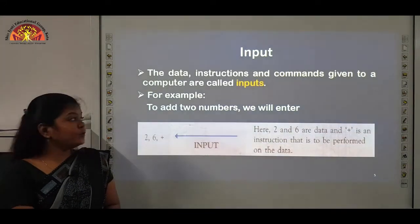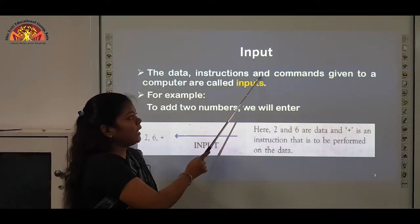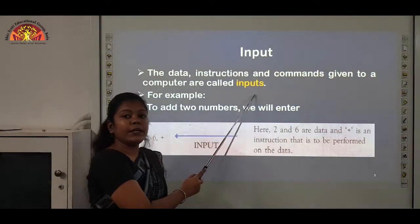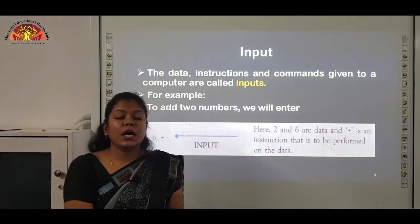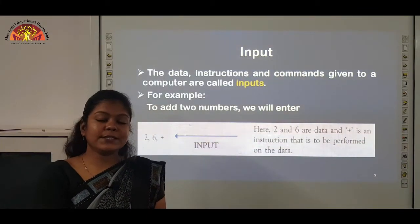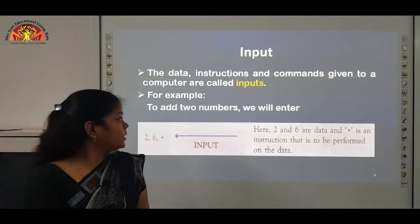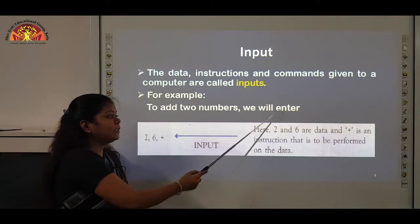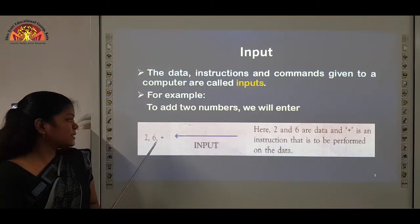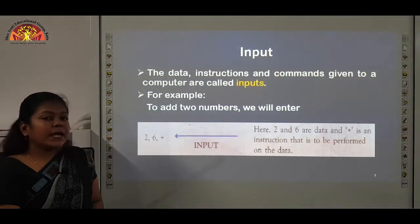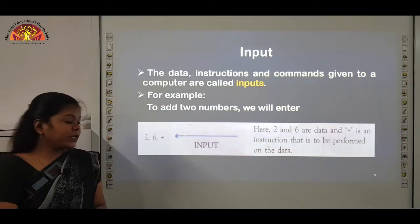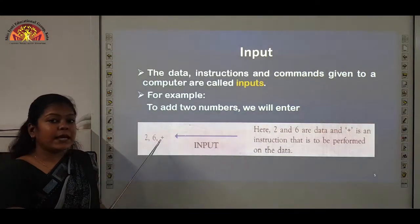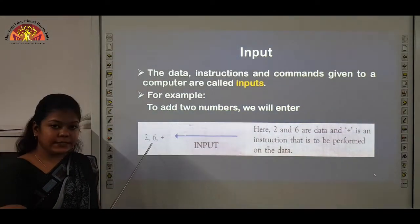First is input. The data, instructions, and commands given to a computer are called inputs. All inputs are given to a computer using input devices like keyboard, mouse, etc. For example, to add two numbers, we enter 2, 6, and a plus symbol — they all act as input for the computer. Here 2 and 6 are data, and the plus symbol is an instruction that will be performed on this data.